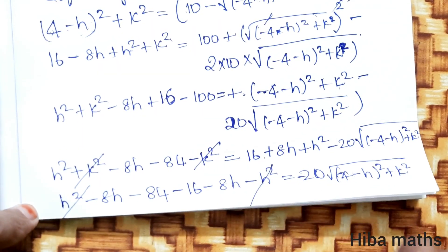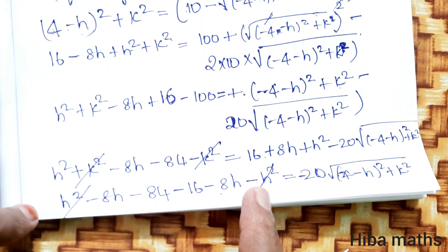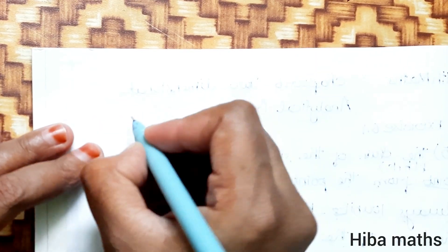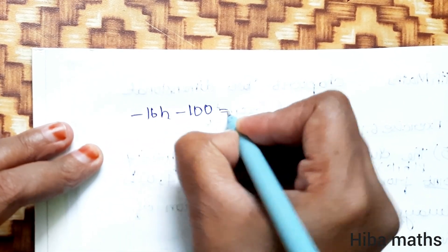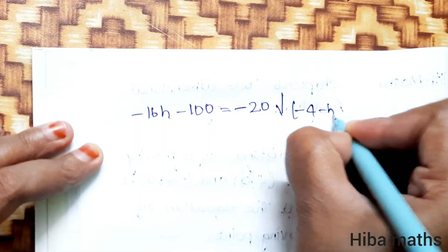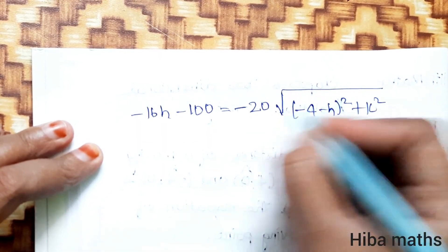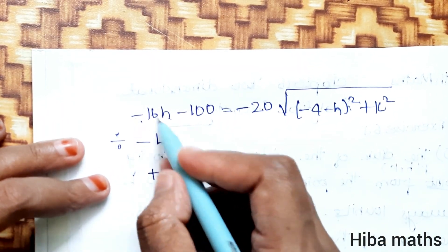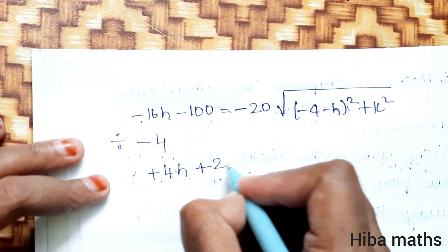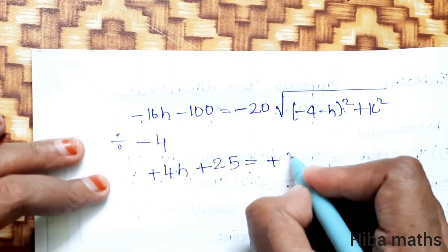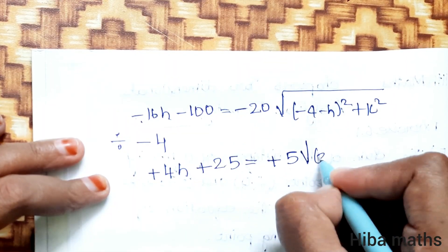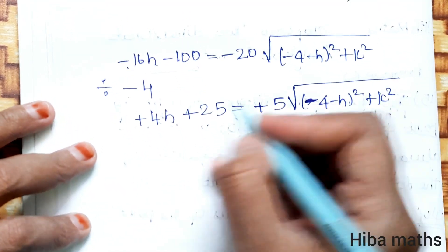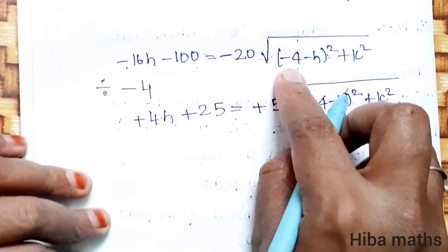The h square terms cancel. Simplifying minus 8h terms: minus 16h plus 100 equals minus 20 root of (minus 4 minus h) whole square plus k square. Rearranging, we get 4h plus 25 on the left side equal to 5 times root of (minus 4 minus h) whole square plus k square.